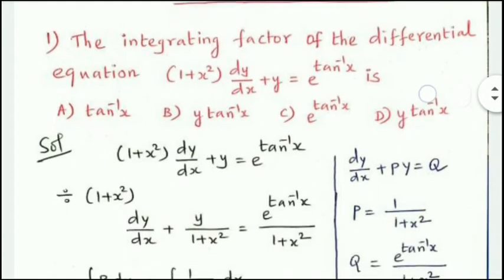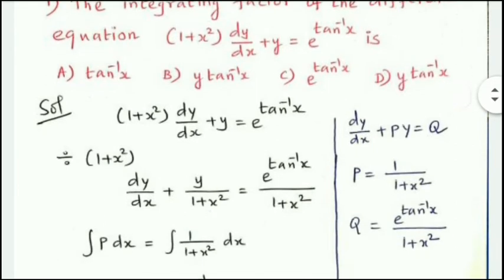The equation is in the first linear form: dy/dx + Py = Q. Dividing through by (1 + x²), we compare with the general form to identify P and Q. P equals 1/(1 + x²) and Q equals e^(tan⁻¹x)/(1 + x²).